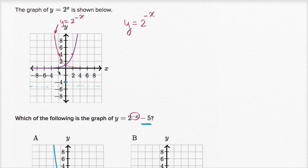So it should look something like what I'm drawing right now. So now we can look at which choices. This should be the graph of y equals two to the negative x minus five.